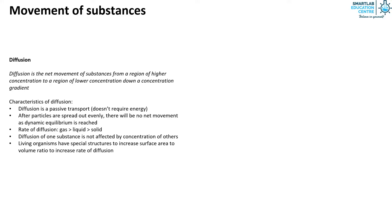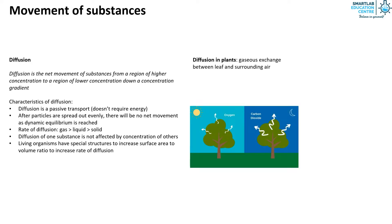Now let's see how diffusion occurs in plants and animals. In plants there is gaseous exchange between leaf and surrounding air via diffusion. During the day, carbon dioxide diffuses into the leaf and oxygen diffuses out. Whereas at night oxygen diffuses into the leaf and carbon dioxide diffuses out.